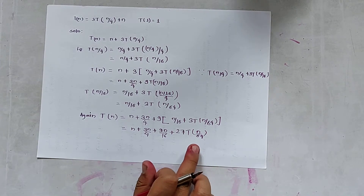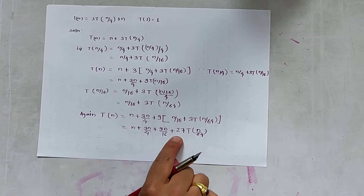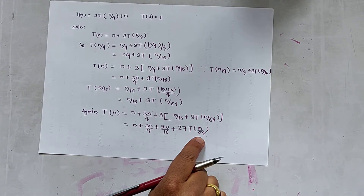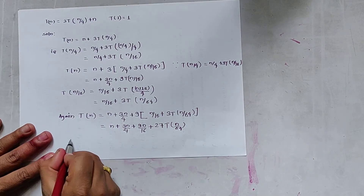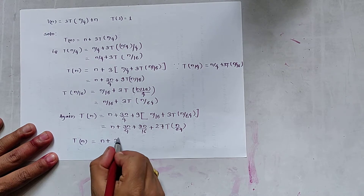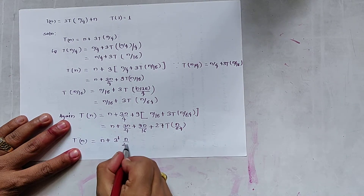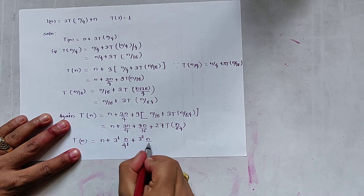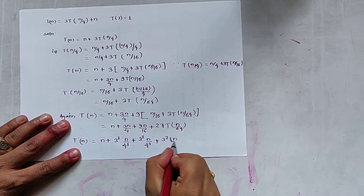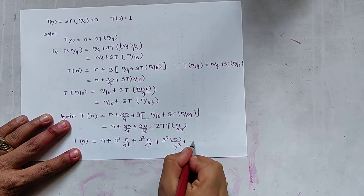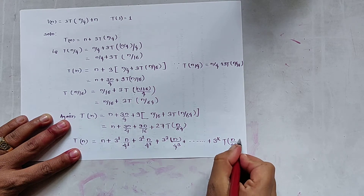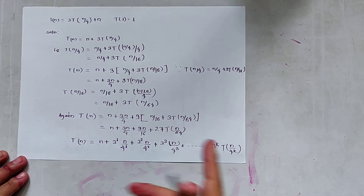Similarly, when we extend further and substitute the value of T(n/64), it gives 81T(n/256). In general, T(n) can be expressed as T(n) = n + 3¹·(n/4¹) + 3²·(n/4²) + 3³·(n/4³) + ... + 3^k · T(n/4^k).